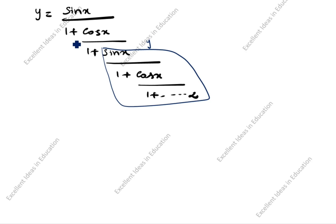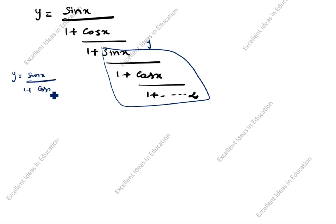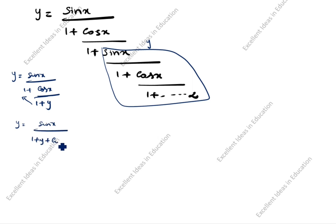You see here, y is given as sin x plus 1 plus cos x divided by 1 plus — the same thing goes on to infinity, so we will take the whole thing as y. The question is: y is equal to sin x divided by 1 plus cos x divided by 1 plus y. The same thing comes repeated, so we take it as y. So y is equal to sin x divided by 1 plus y plus cos x.